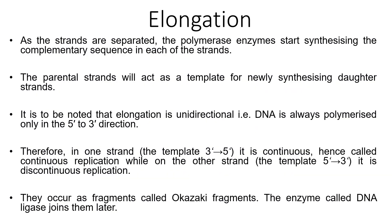Moving on to the elongation process, which is step two: as the strands are separated, the polymerase enzymes start synthesizing the complementary sequence at each of the strands. For instance, if you have ATCG, that will become TAGC. The parental strands will act as a template for newly synthesizing daughter strands. It must be noted that elongation is unidirectional — DNA is always polymerized in the five prime to three prime direction. In one strand, the template three prime to five prime is continuous, and this is called continuous replication. While on the other strand, the five prime to three prime is called discontinuous replication.